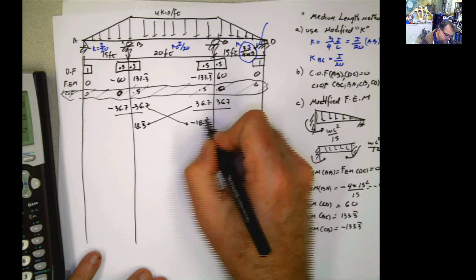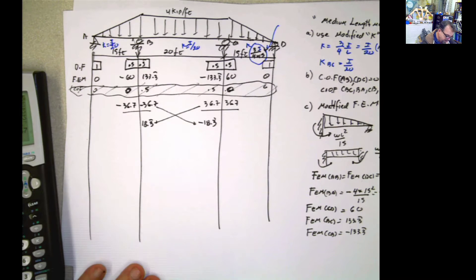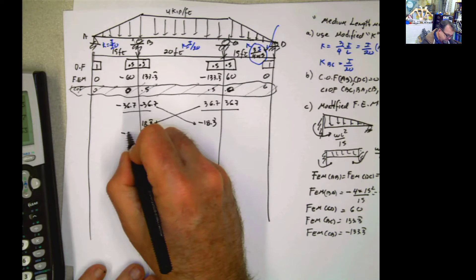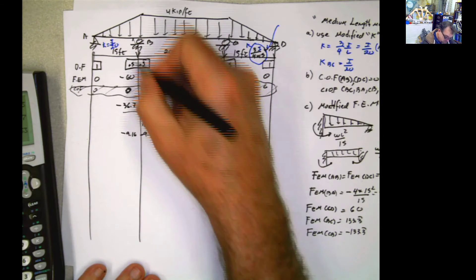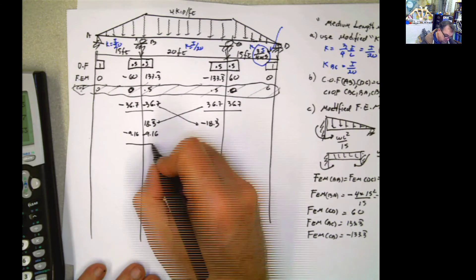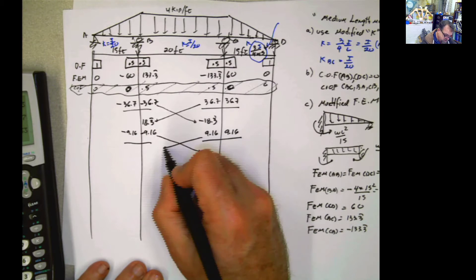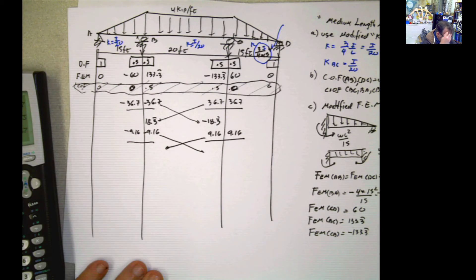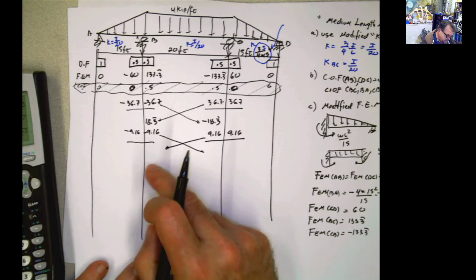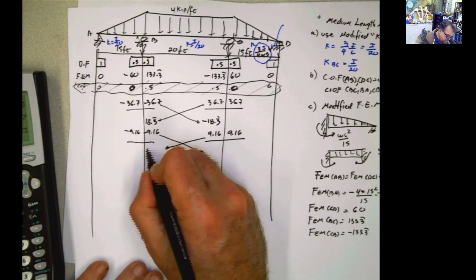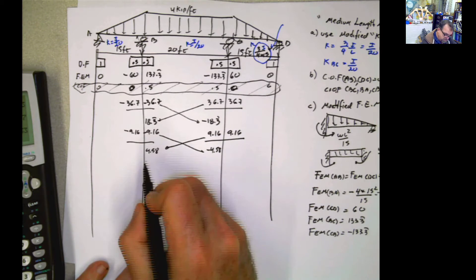So this is going to be multiplied by 0.5. So again, negative 9.16, 9.16 negative, because the distribution factor is that. Logged, 9.16, 9.16. Log, transfer, transfer, divided by 2, or multiplied by 0.5, which is the same thing. This one here is going to transfer 4.58, 4.58. And this is going to be transferring negative 4.58. Balance this.